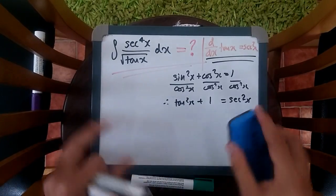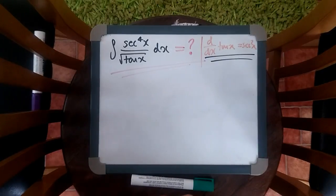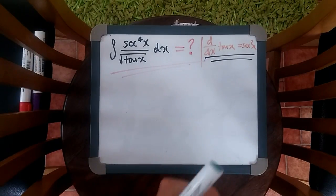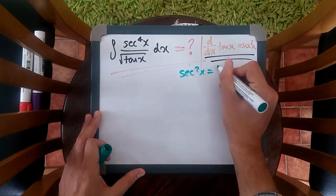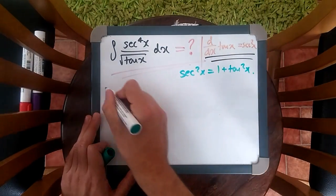So I'm going to keep this over here as well. So you're going to keep on the side, sec squared x equals one plus tan squared x. This is going to be useful in a minute and I'll show you why. Now let's begin.